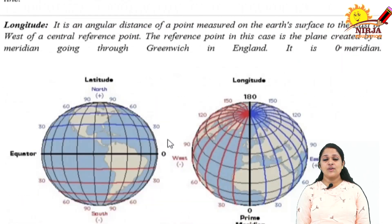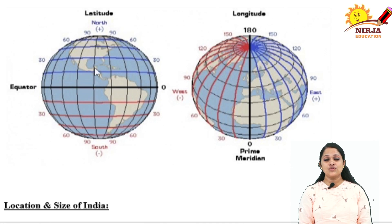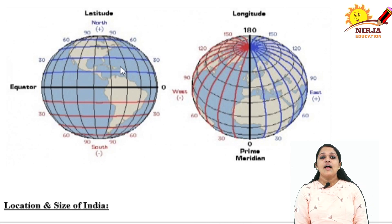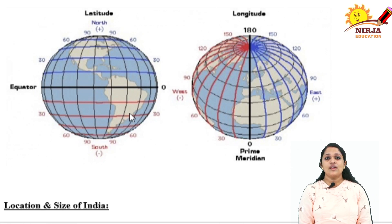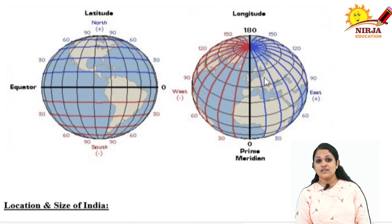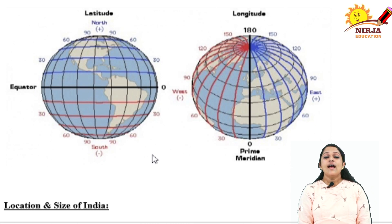Now, how will you find out positive latitude and negative latitude? Above the equator are positive latitudes and below the equator are negative latitudes. Similarly, in the case of longitude, on the east side you can find the positive degrees, and on the west side there are negative degrees. Without these reference points you cannot locate any country on the globe. If you have the longitude and latitude of any country, you can easily locate it on the globe.